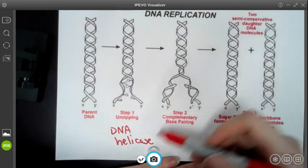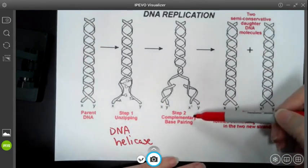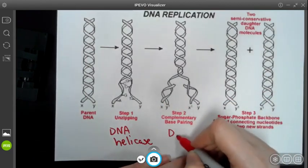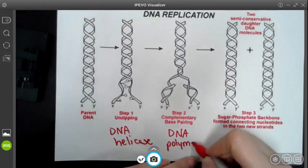During step two, after you have the two strands broken, you're going to start adding complementary base pairs. And there's another enzyme that is involved in that, and that is called DNA polymerase.